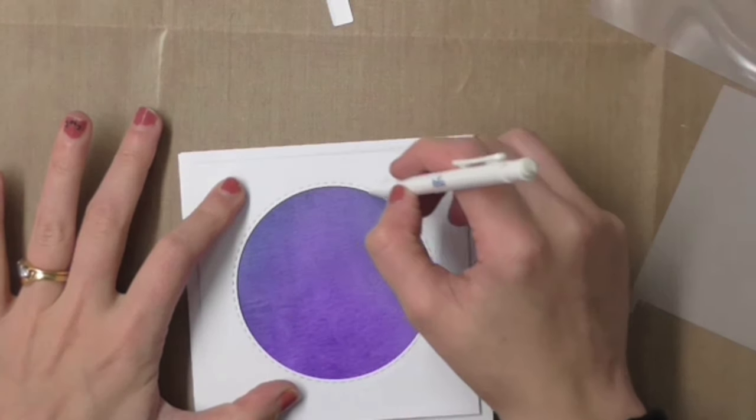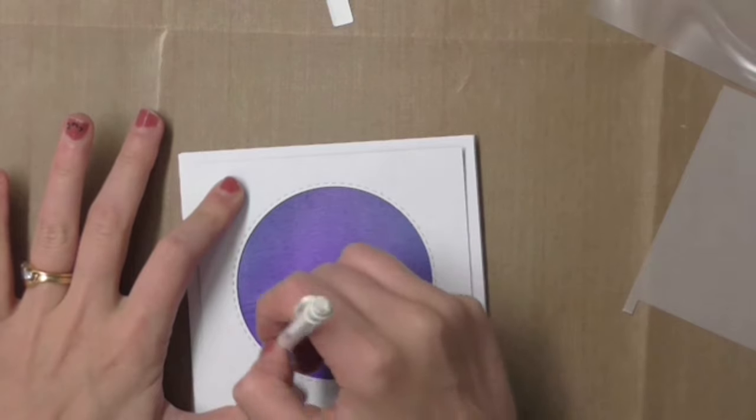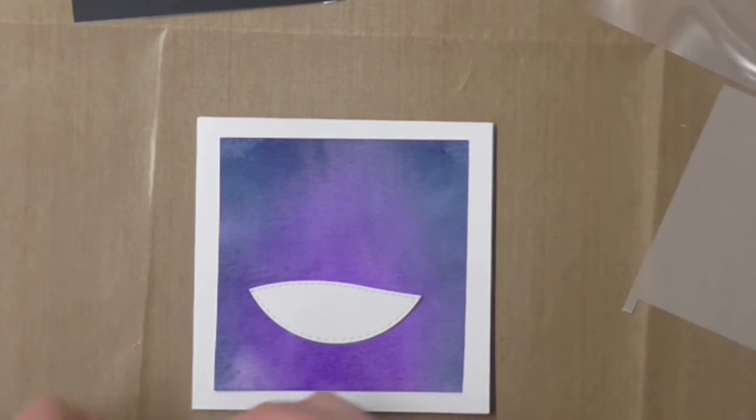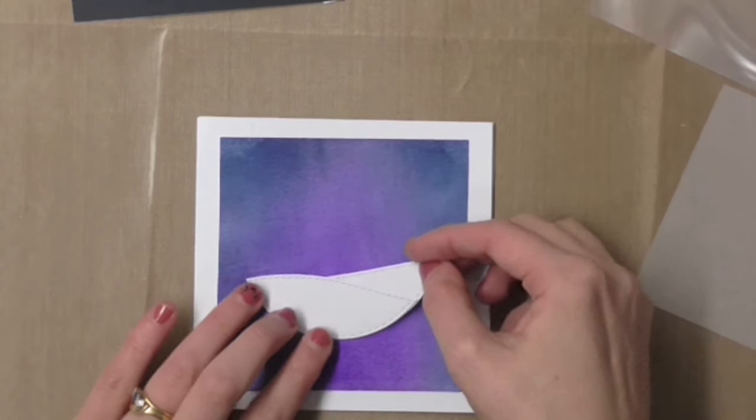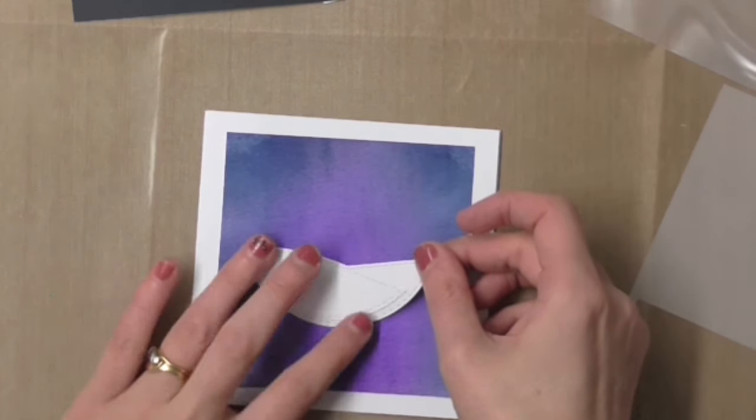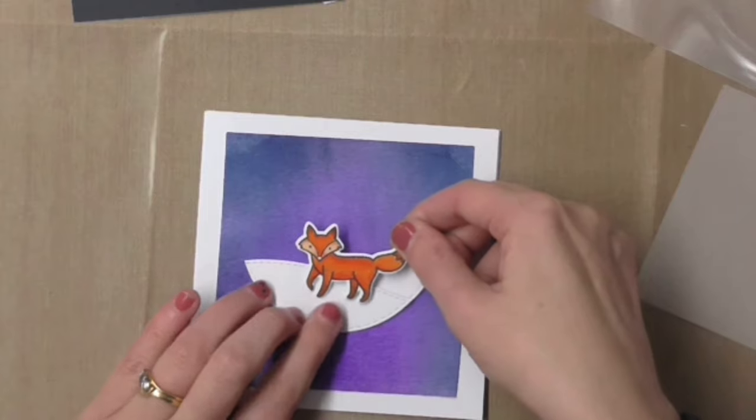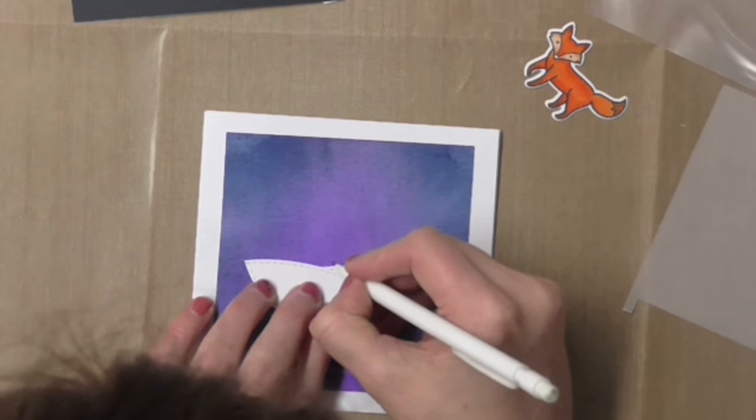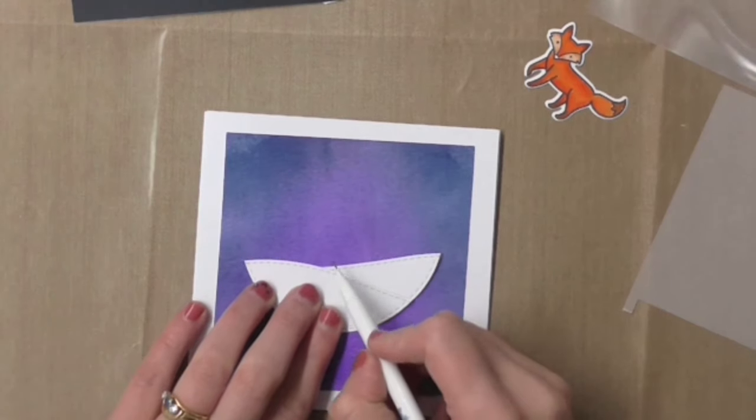I want it to go right behind my fox so I'll put a mark here in the middle of my card and that's where I want the LED to go.